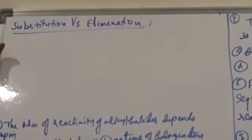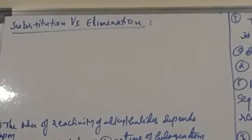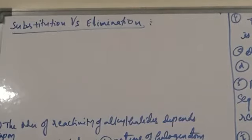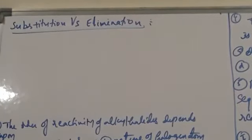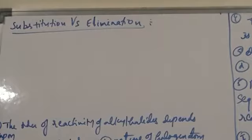The next topic is substitution versus elimination. In alkyl halides or haloalkanes, two types of reactions are more favorable: first priority should be given to nucleophilic substitution reactions, and then elimination reactions. Here, a nucleophile is a base which has a tendency to donate the lone pair of electrons to the carbon atom which is linked with the leaving group.